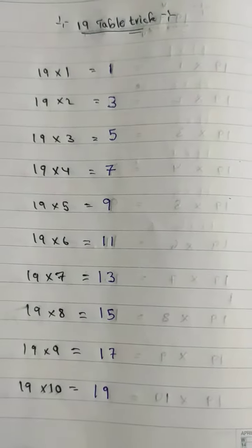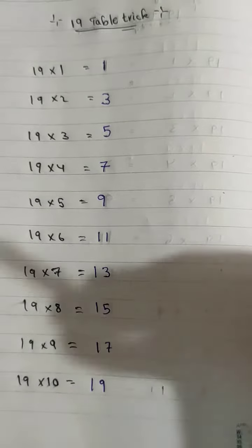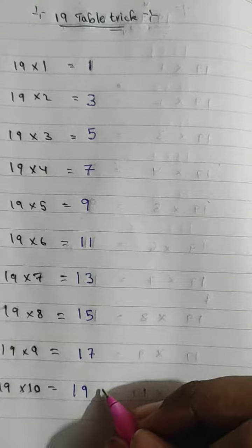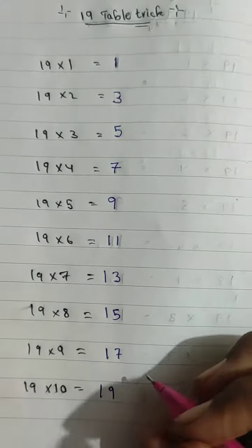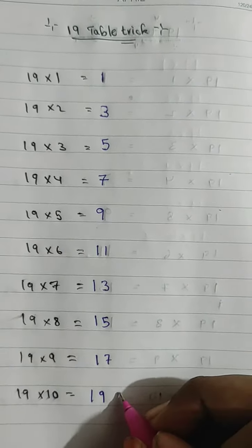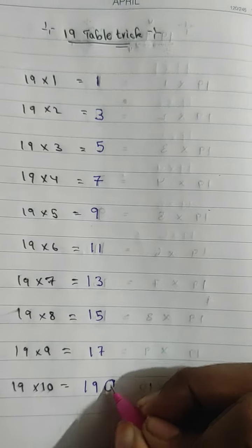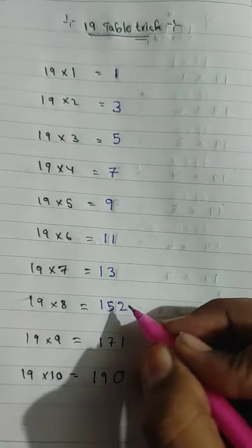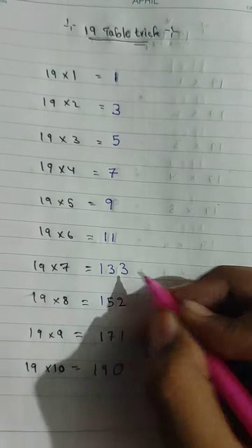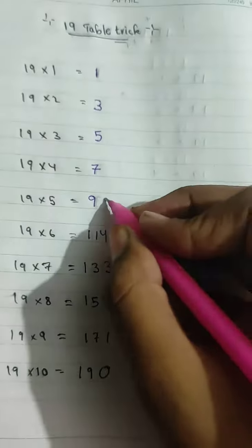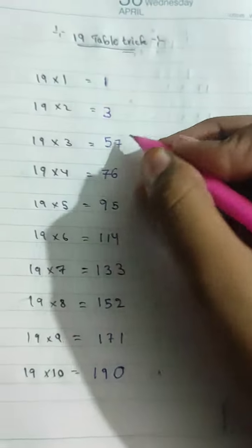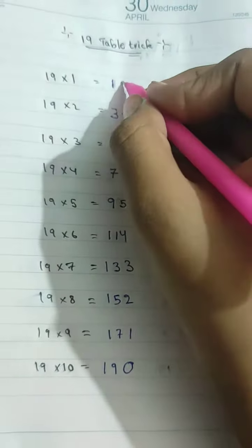Now we need to write the remaining digits from downwards or upwards. So I am writing from downwards. Alright. 0, 1, 1, 2, 3, 4, 5, 6, 7, 8, 9.